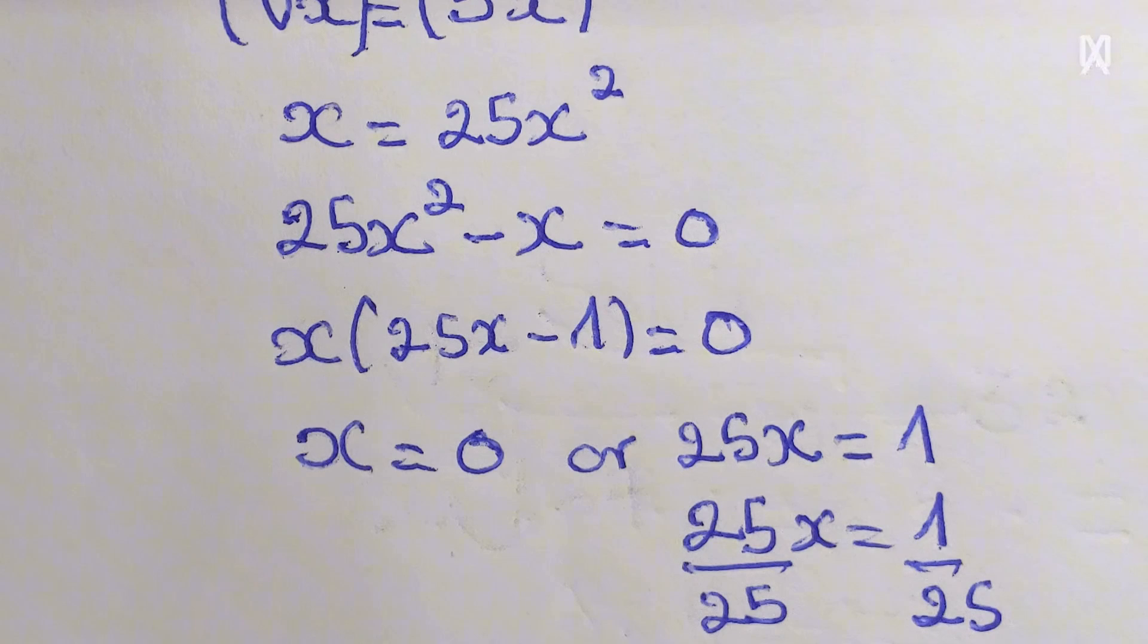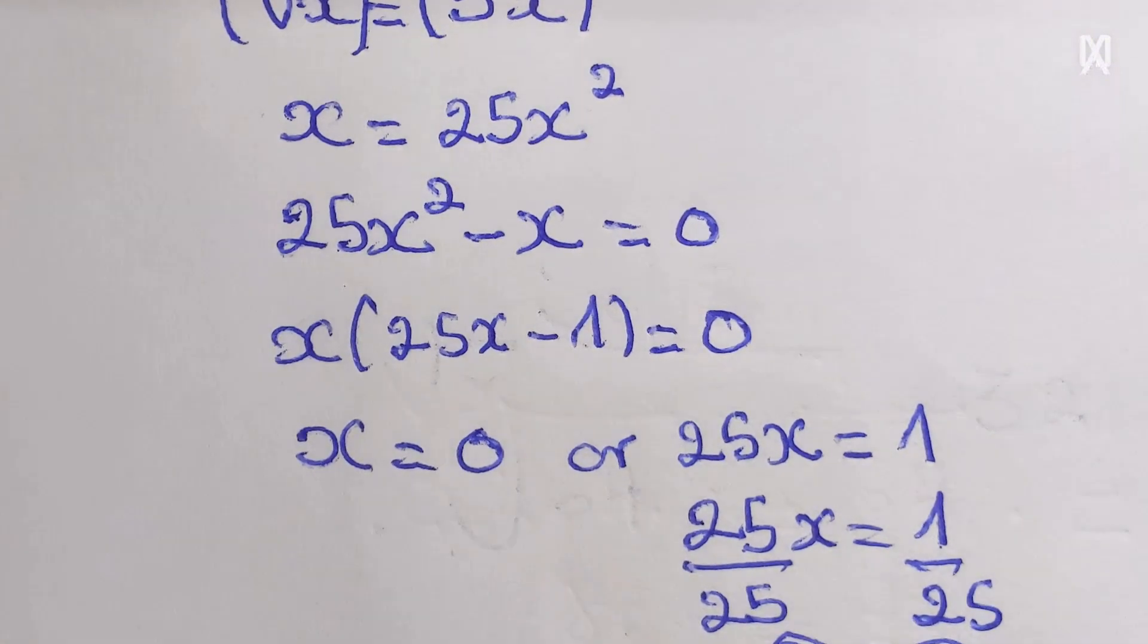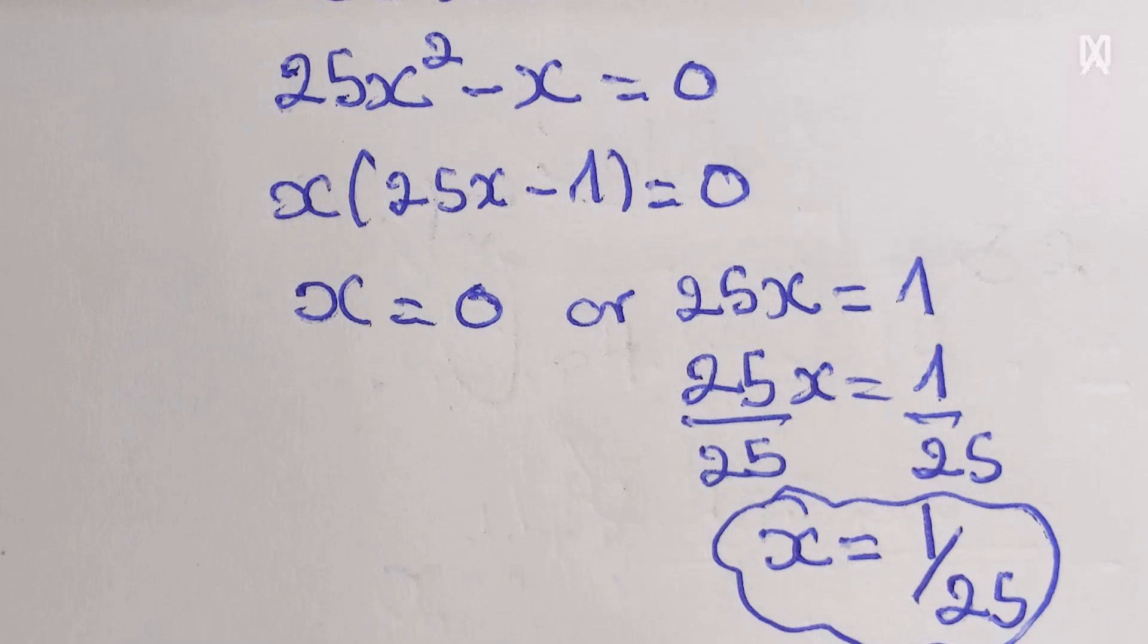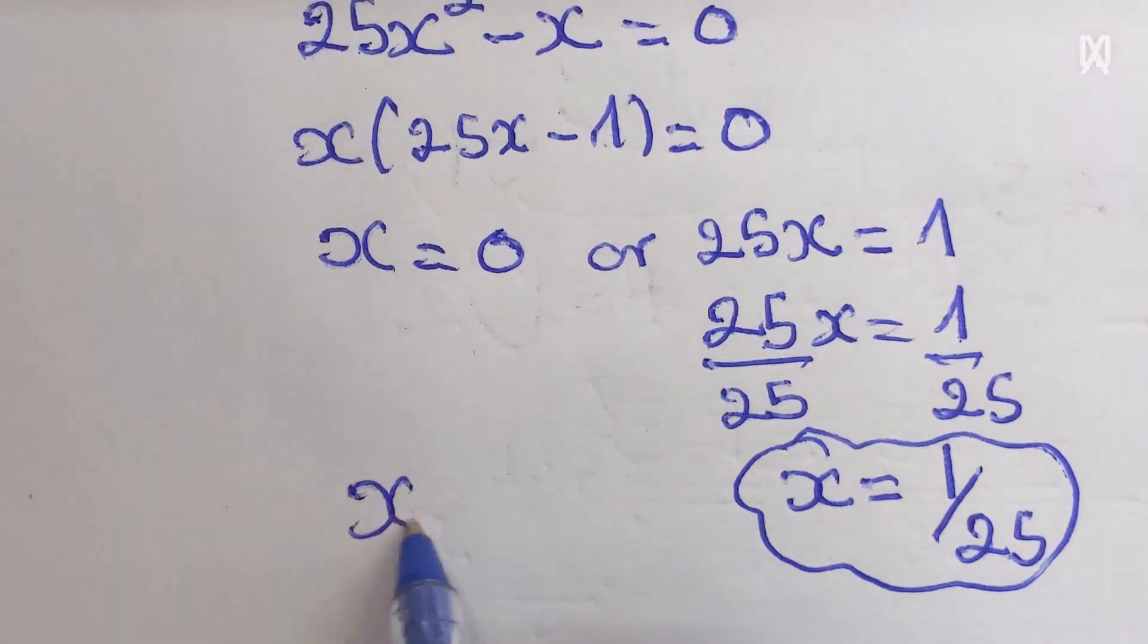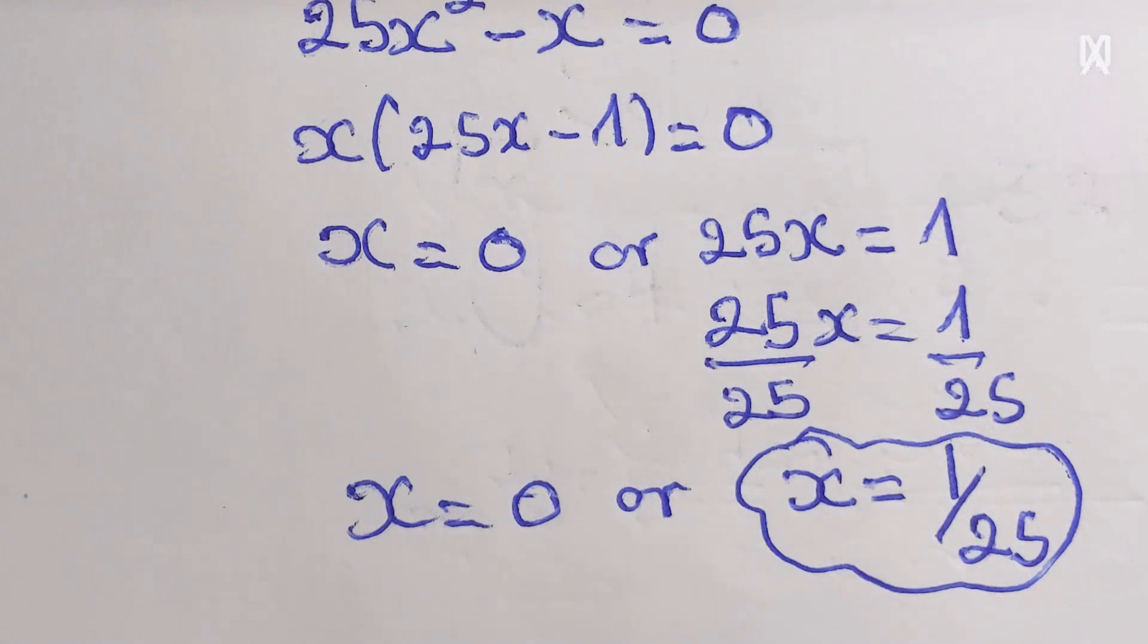Here 25x will be equal to 1. Divide by 25, then x here will be equal to 1 over 25. So we have x equal to zero or 1 over 25.